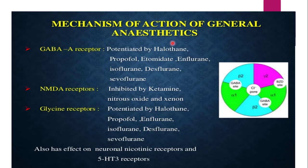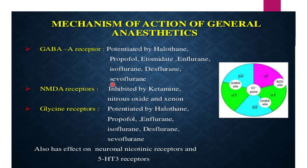Coming towards the mechanism of action of general anaesthetics. Our prime focus is Halothane. There are various mechanisms by which Halothane acts, the major one being that it acts on the GABA-A receptor in coordination with GABA receptors. As you know, GABA receptors produce inhibitory effects through GABA — gamma-aminobutyric acid. So the inhibitory effect is potentiated by Halothane to produce depression of the CNS.